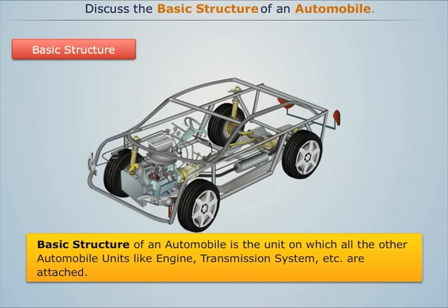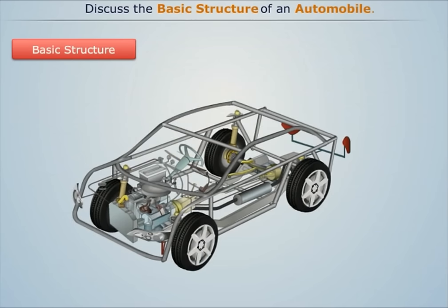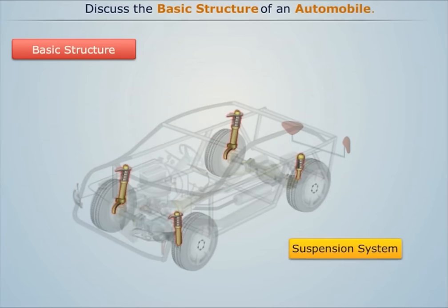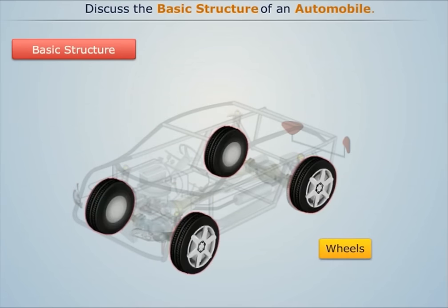The basic structure of an automobile is the unit on which all other automobile units like the engine and transmission system are attached. It mainly comprises the frame, suspension system, axles, and wheels.